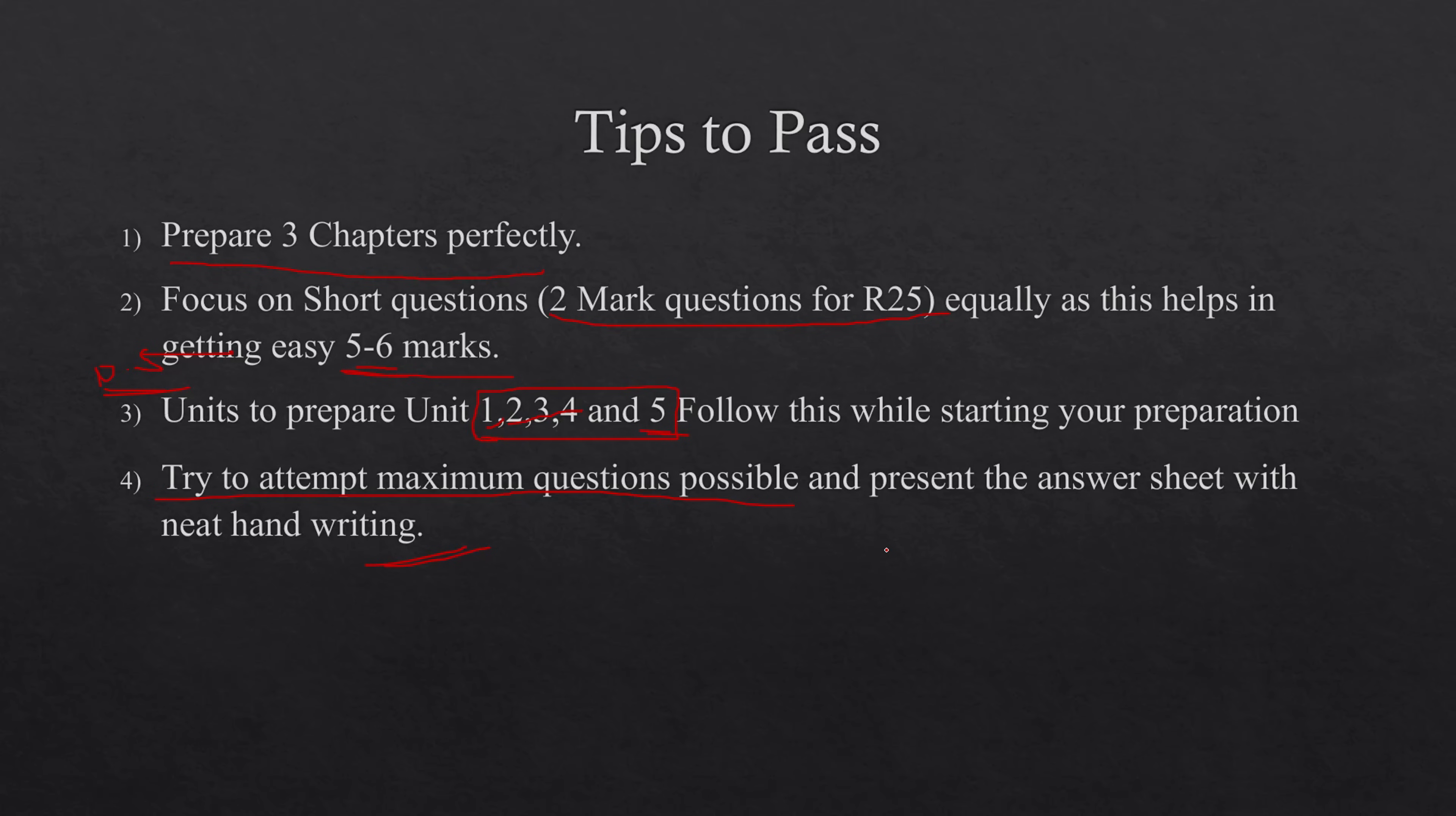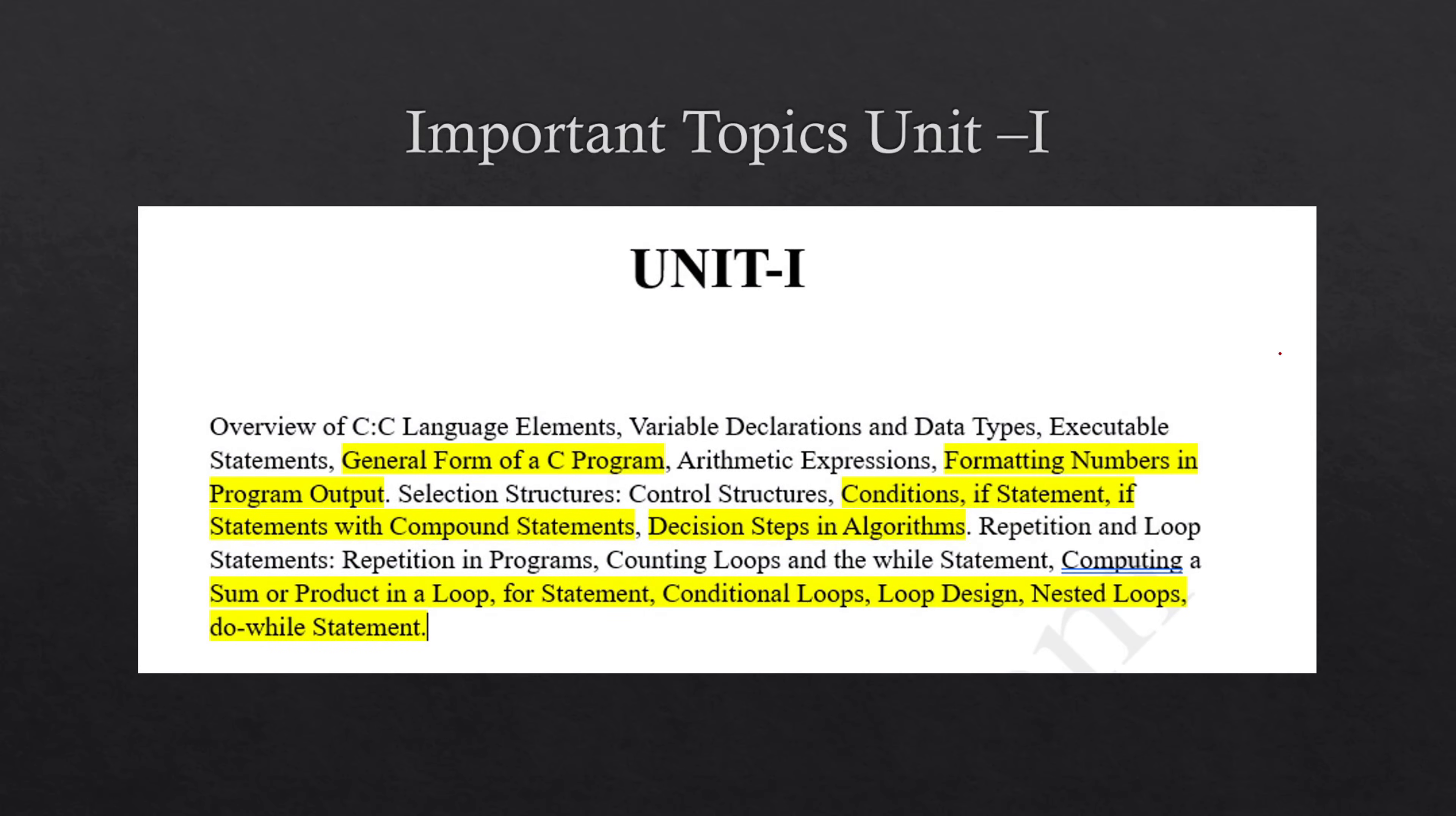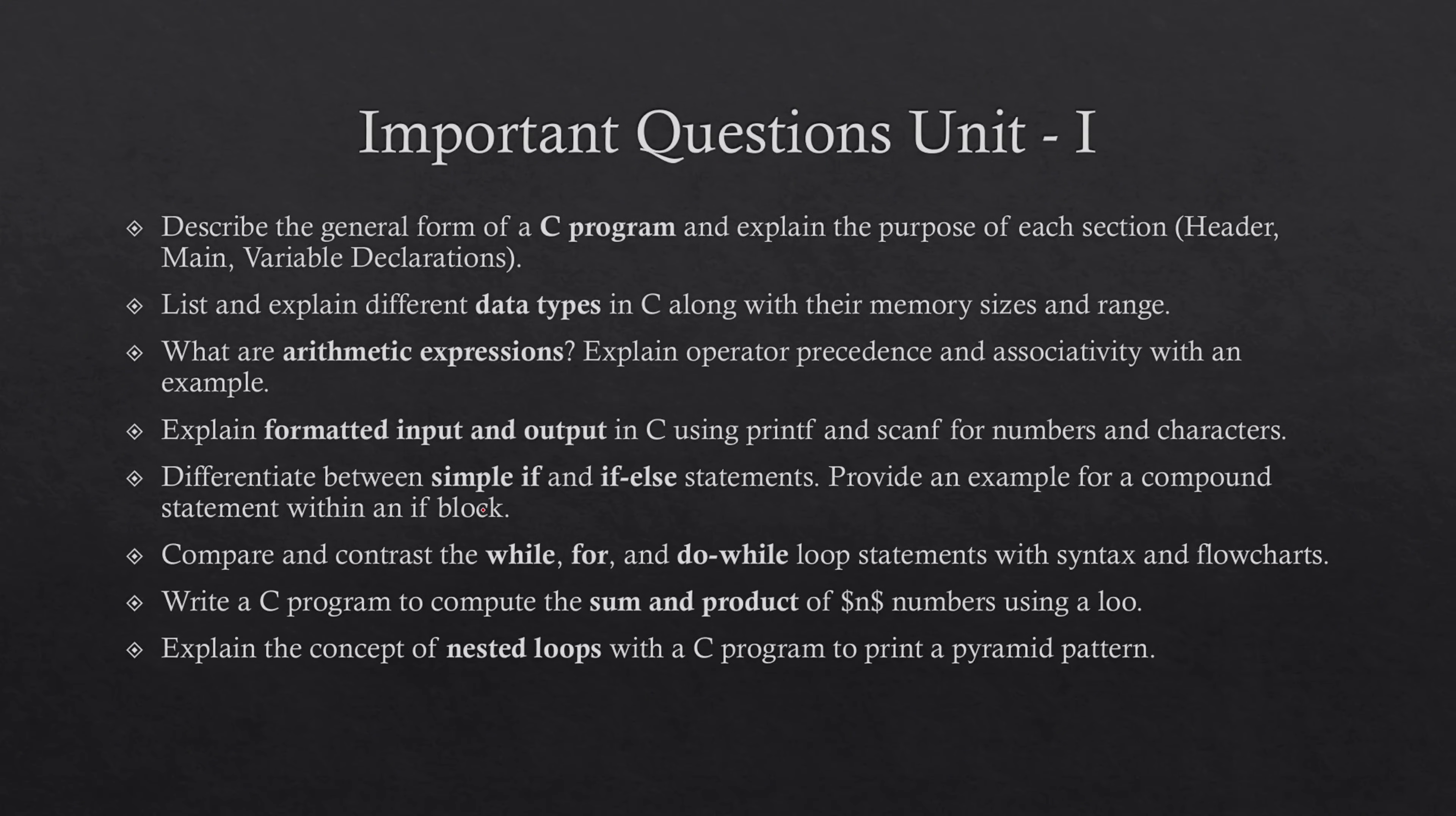Important topics of Unit 1: general form of a C program, formatting numbers in program output, conditions statement, if statement, if statements with compound statements, and decision steps in algorithm. Decision steps in algorithm is most important. Then you have conditional loop, loop design, nested loops, and for statement.